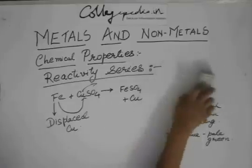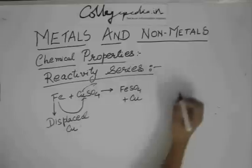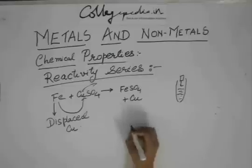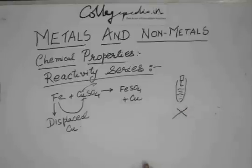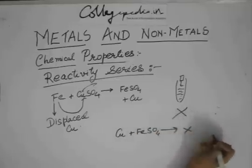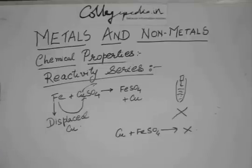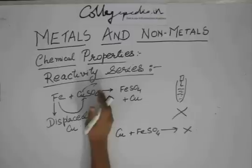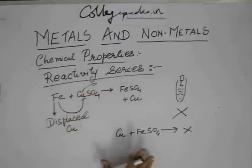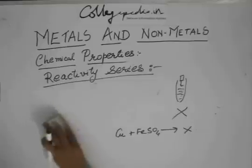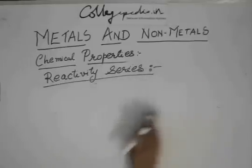But if you do the reverse — if you have ferrous sulfate and you put a copper rod in it — you will see that nothing will happen. Cu plus FeSO4 gives no reaction. This happens because iron has more power than copper for displacing it from its salt solution. In other words, iron is more reactive than copper. And thus, we determine a series called the reactivity series.